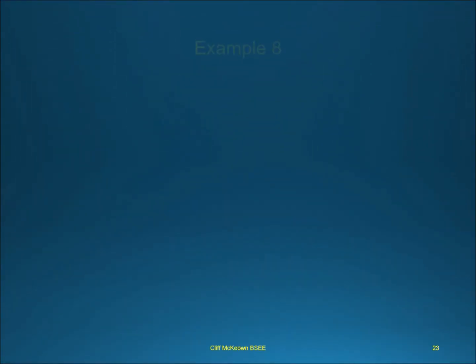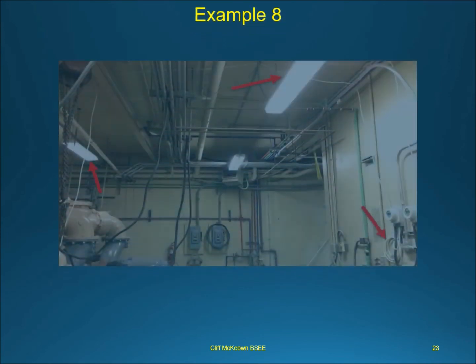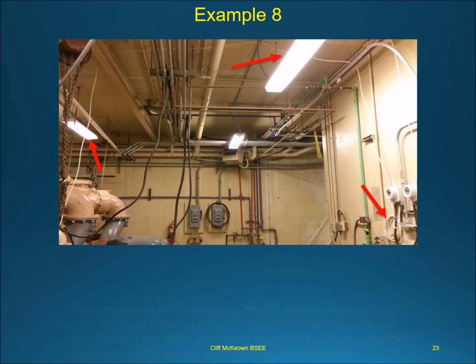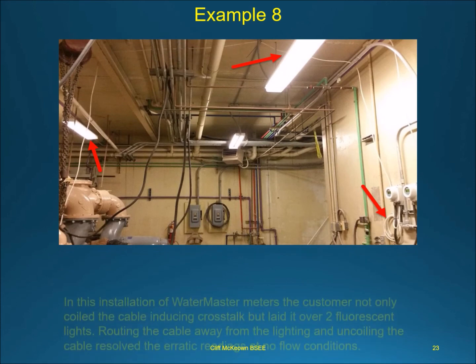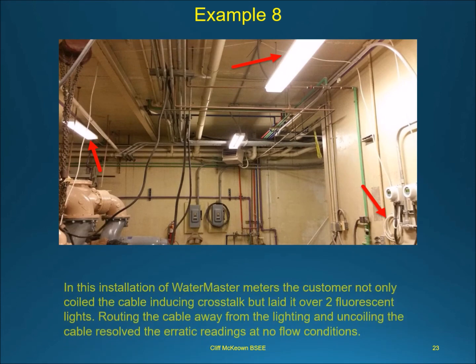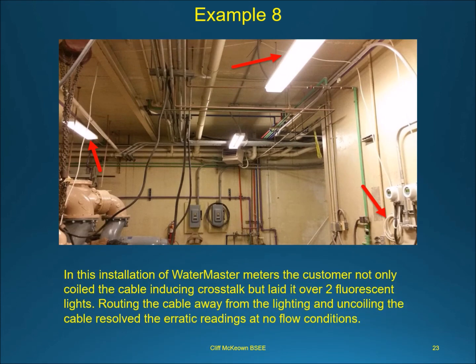In this installation of Water Master meters, the customer not only coiled the cable — inducing cross-talk — but laid it over two fluorescent lights. Routing the cable away from the lighting and uncoiling the cable resolved the erratic readings at no-flow conditions.